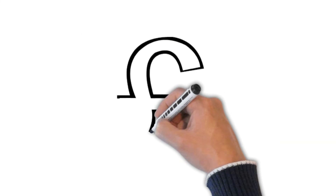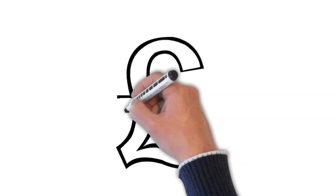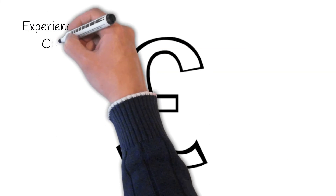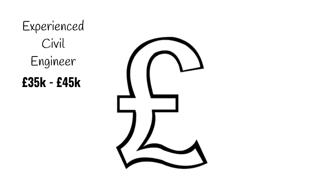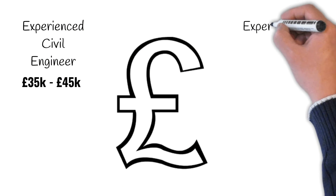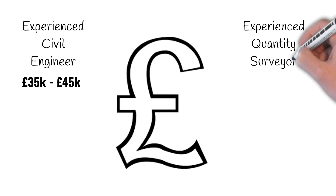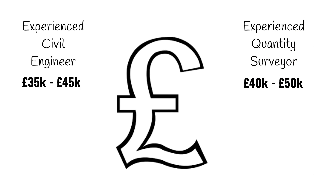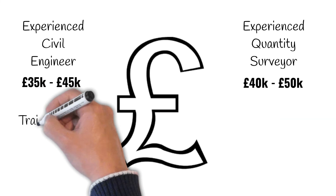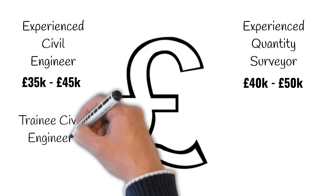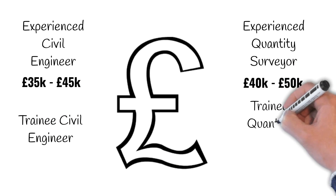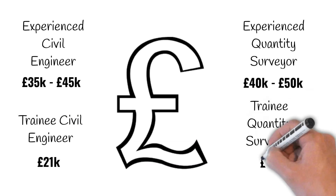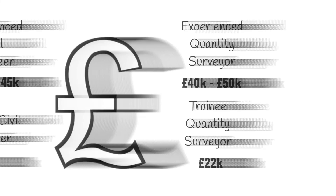Finally, we'll talk about salaries. The average salary for an experienced civil engineer is between $35,000 and $45,000, and the average salary of an experienced quantity surveyor is between $40,000 and $50,000. As with all careers, there are roles above and below these positions, such as trainee civil engineer and trainee QS, at $21k and $22k respectively.